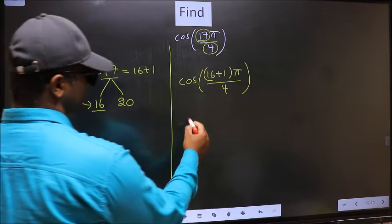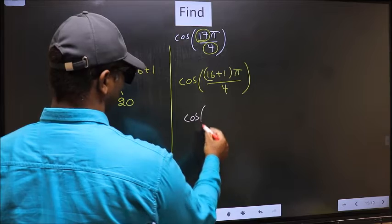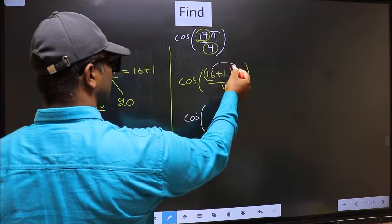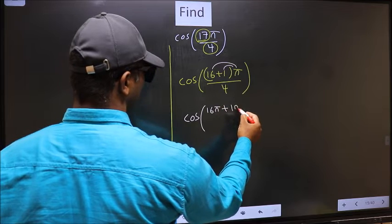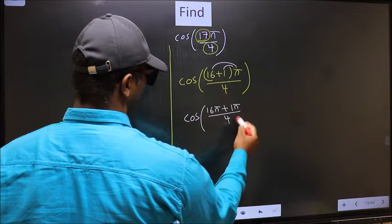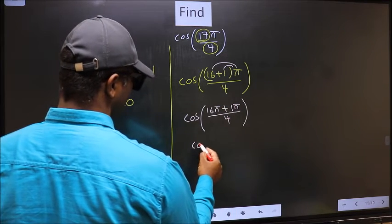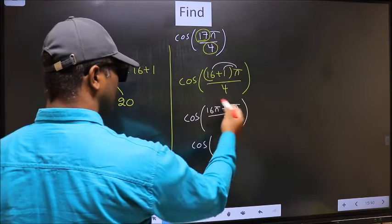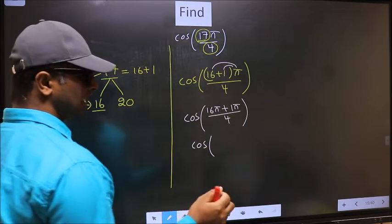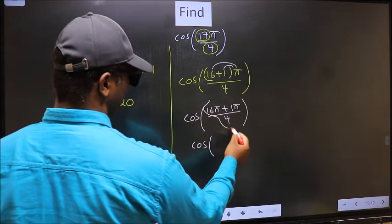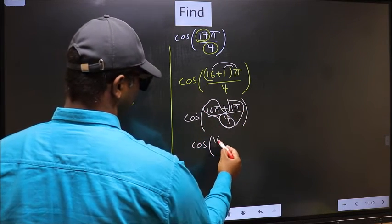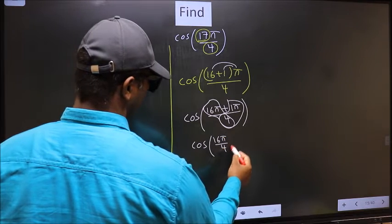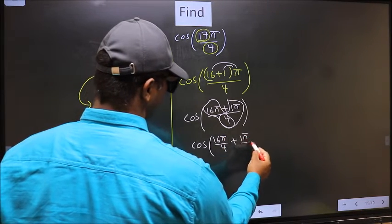Next. Cos. Now you should open up the brackets. You get 16 pi plus 1 pi by 4. Now cos. Here you should split the denominator in this way.